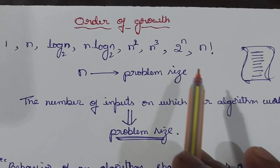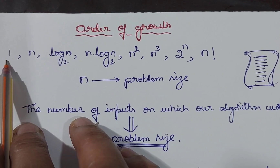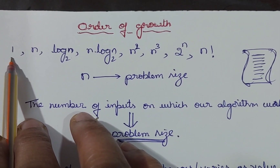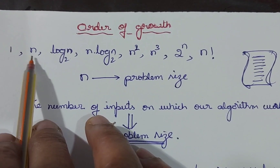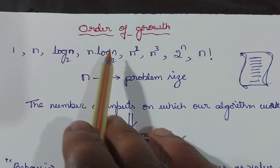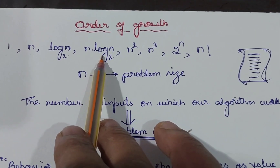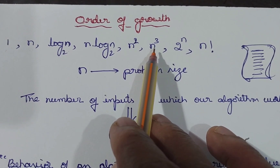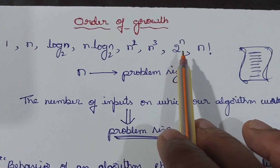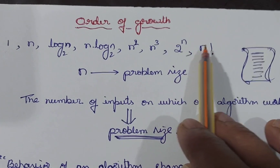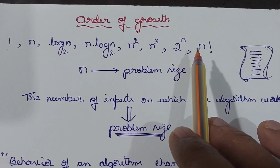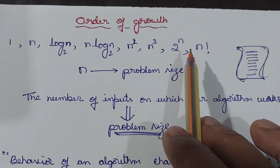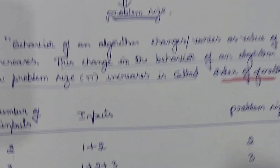Among these basic efficiency classes, the least one is 1 — meaning whichever algorithm always takes constant time for any problem size, we say that algorithm is faster. If an algorithm takes time linear, that is n, we also consider it fast. N log n is also acceptable. If any algorithm is taking up to n log n, we say it is faster. If it takes n² or n³, it will be a little bit slower. But the two mathematical functions — 2 to the power of n (exponential) and n factorial — represent much slower algorithms.